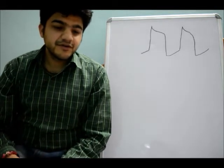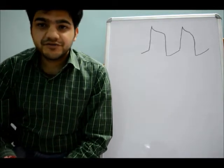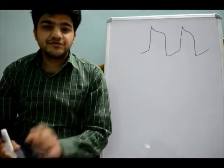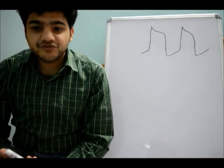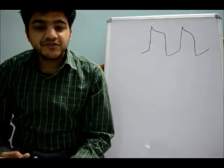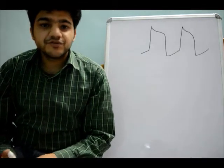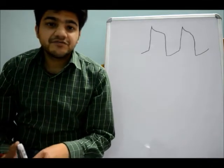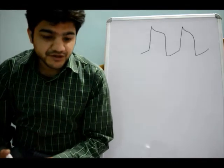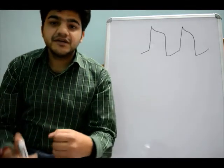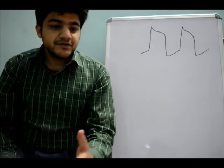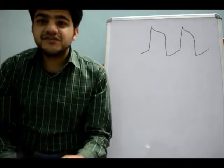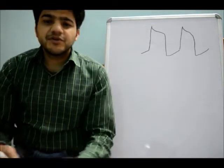Hello everyone, today we will be discussing the mechanism of anti-arrhythmic drugs. In my previous videos, I have discussed the mechanisms of generation of arrhythmias. There were three important mechanisms: one was enhanced automaticity, second was triggered activity in the form of after depolarizations — that is early and delayed after depolarizations — and the third was the phenomenon of re-entry. All these three mechanisms cause arrhythmias, and anti-arrhythmic drugs act by countering any of these three mechanisms or maybe a combination of all of them.